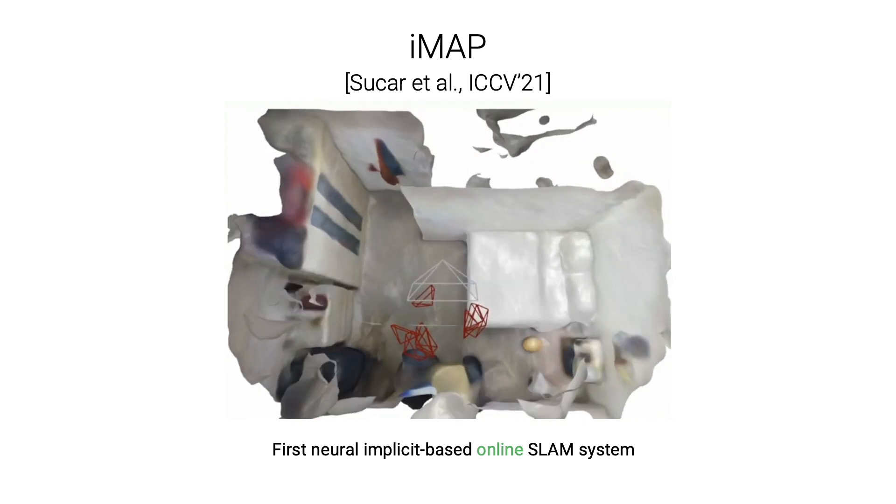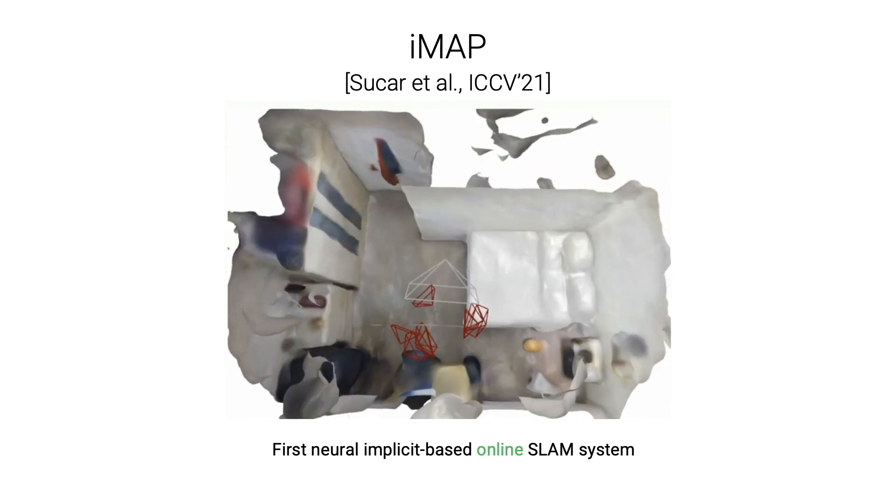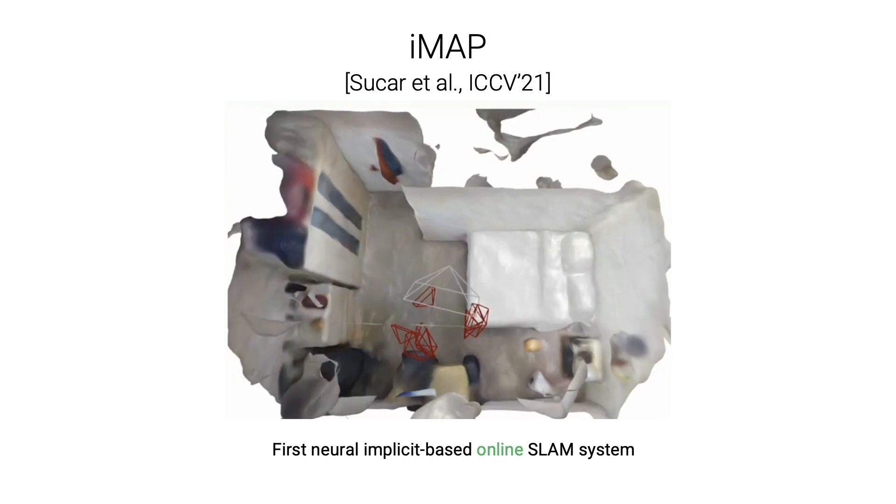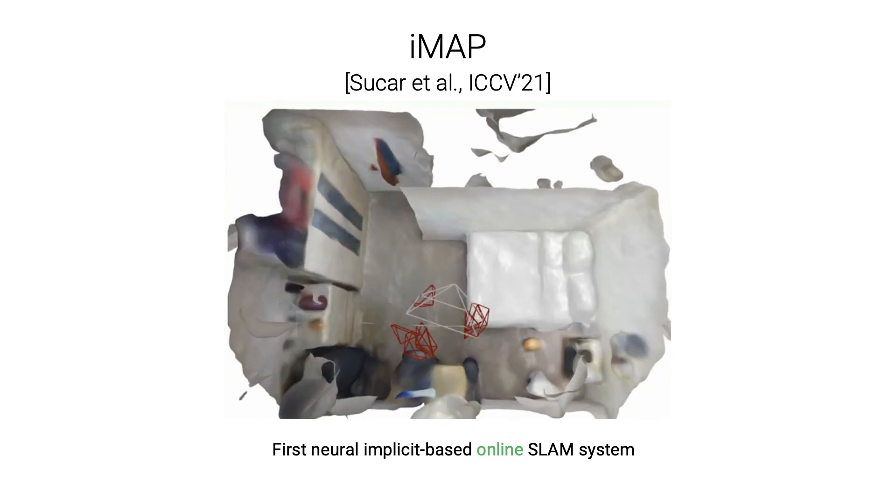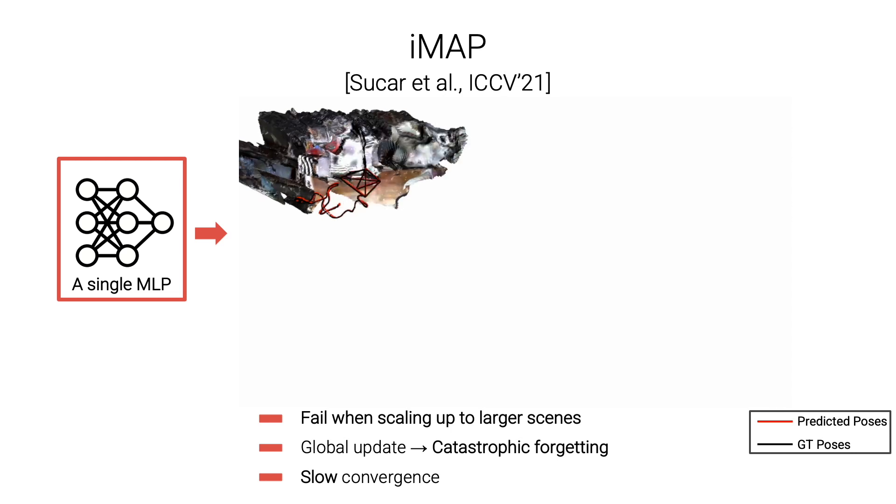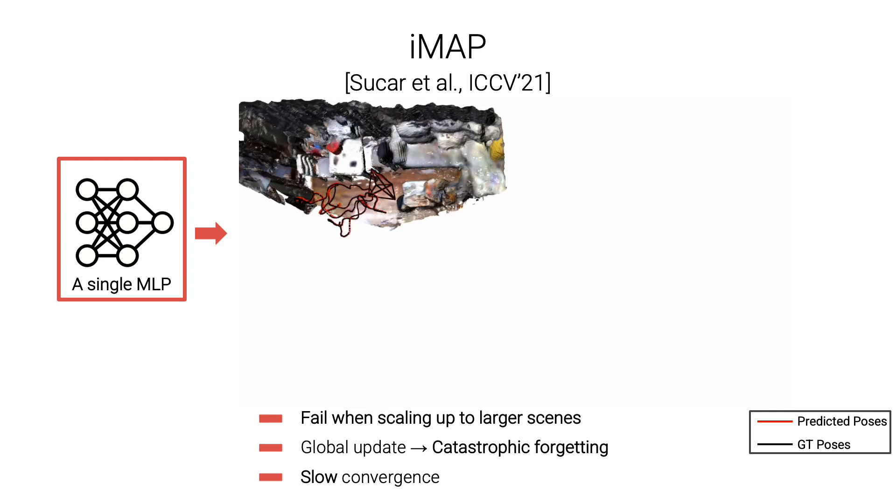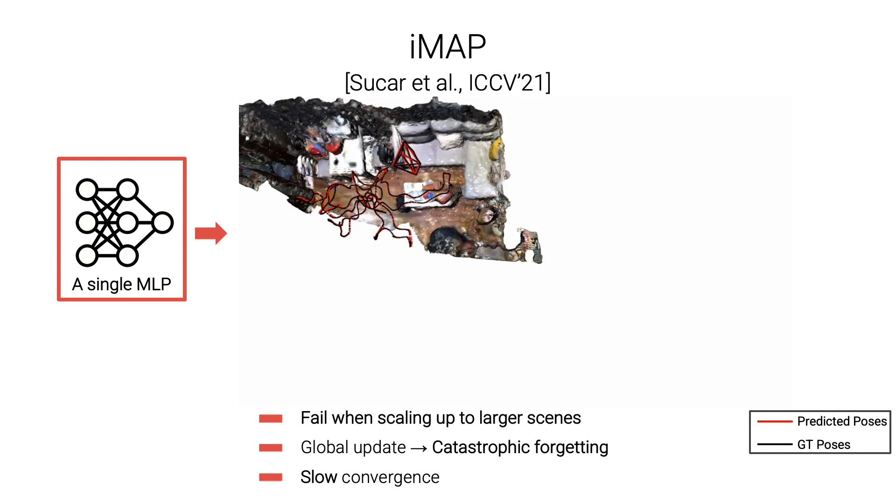For a small room like this, they can simultaneously estimate camera poses and dense scene geometry in a continued learning fashion. However, since they use a single big MLP as the only scene representation, they have the following problems.